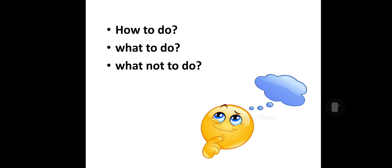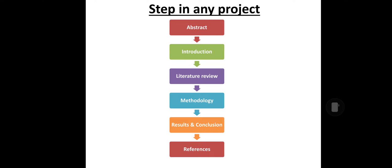The seven steps in the project are: abstract, introduction, literature review, methodology, results and conclusion, and references. These seven steps play a crucial role in whatever the project may be. Whatever the project may be, it starts with the abstract in the initial stage after topic selection, then it ends with the references.